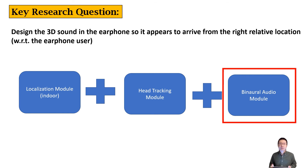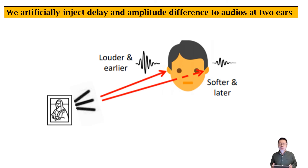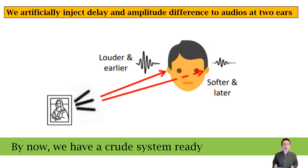Now let's look at the binaural audio module. After we get the location and head orientation of the user, we build the binaural audio part on top of them. When the system determines that the user is near some audio-annotated object, it will start to play the binaural audio. The binaural audio's elevation angle and azimuth angle relative to the human head are determined by the relative location of the user and the annotated object, as well as the user's head orientation. We generate the binaural audio by artificially injecting delays and amplitude differences to the sound at two ears according to the elevation and azimuth angles, and play this binaural audio through the earphones. We update the binaural audio in real time when the user's location or head orientation changes.